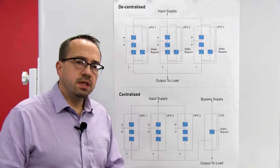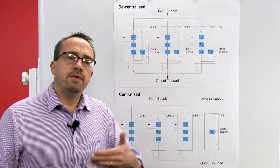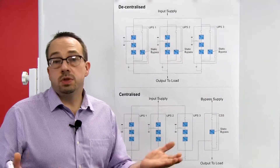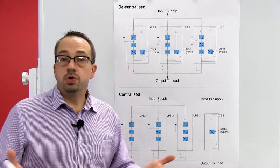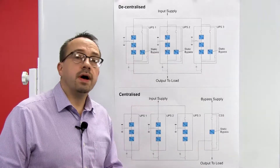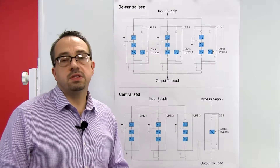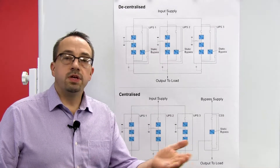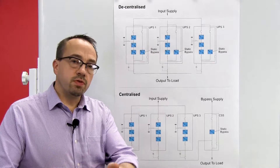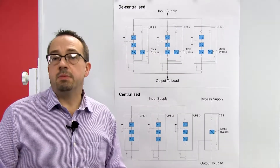In addition to this, the static bypass can also be utilized to clear issues on the outgoing side of the UPS, such as overloads or short circuits. Should an issue arise, the UPS system will simply transfer the load onto the static bypass, allow the issue to be resolved, and then transfer the load back onto the inverter completely seamlessly.